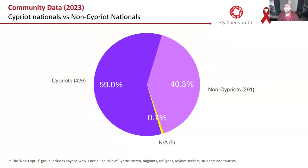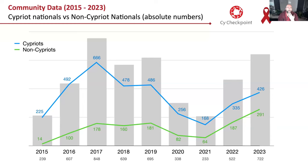These are data from 2023. I've used a pie chart to show that 59% who got tested in 2023 are Cypriot nationals — one part of the pie. Then you've got 40.3% that are not Cypriots, and the yellow part which is 0.7% who did not tell us if they are Cypriot citizens or not. This other example shows the comparison through the years of how many tests were done serving Cypriot nationals and how many tests were done serving non-Cypriot nationals.